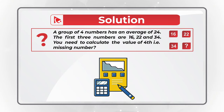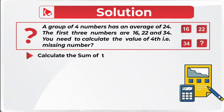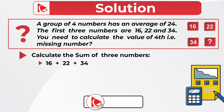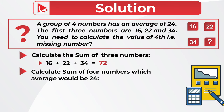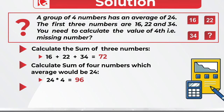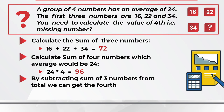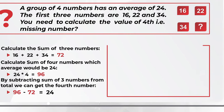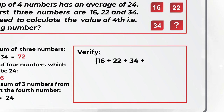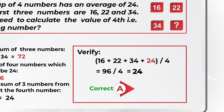First, calculate the sum of the three known numbers: 16 + 22 + 34 = 72. Next, determine the total sum needed for an average of 24 across four numbers: 24 × 4 = 96. Finally, subtract: 96 − 72 = 24. Verification: (16 + 22 + 34 + 24) ÷ 4 = 96 ÷ 4 = 24. The correct answer is choice A, 24.